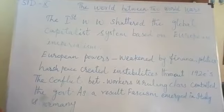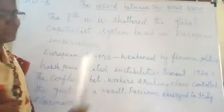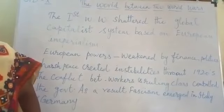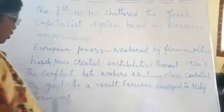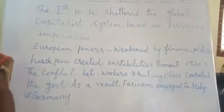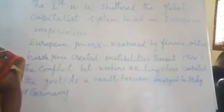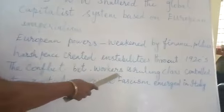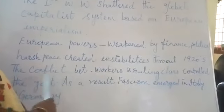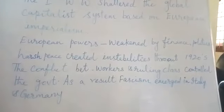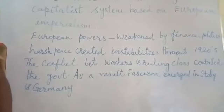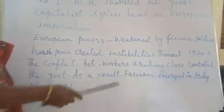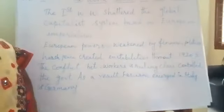There was a conflict between two groups: the workers group and the ruling class group. These two groups of people controlled the government totally. As a result, fascism emerged in Italy and Germany.